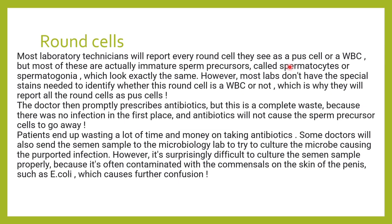They will directly report them as pus cells — perhaps 50 to 60 or 20 to 30 per field. The doctor will then promptly prescribe antibiotics, which is a waste of time and money for the patient, because there may be no infection at all. Sometimes they even end up doing a semen culture, and organisms like E. coli may grow because they are normal commensals too.